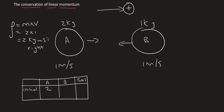So initially object A has a momentum of 2. For object B, it's going to be 1 times 1, but because it's going left, it's going to have a momentum of minus 1. Remember, momentum is a vector, so you must give it a direction.